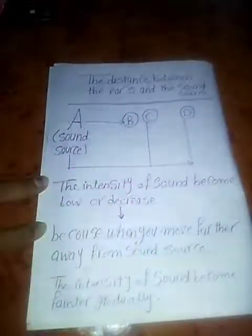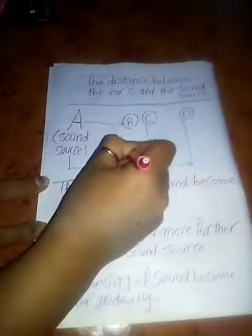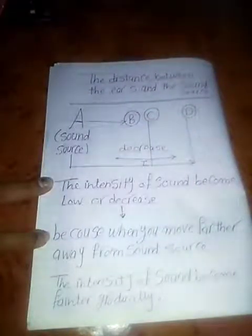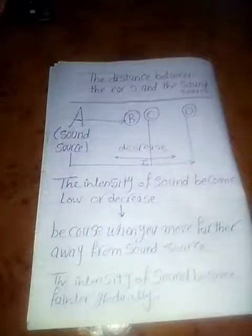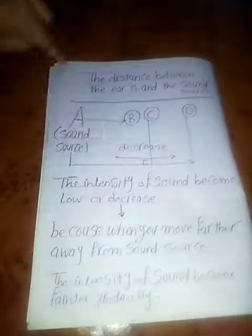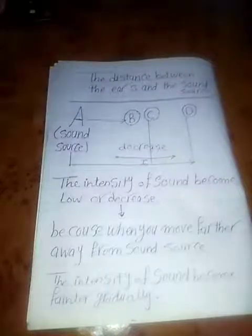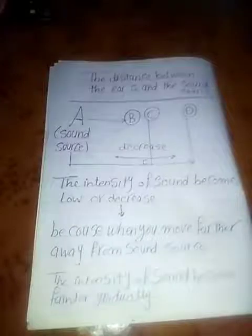When I go from B to C and then to D, the intensity of sound becomes lower and decreases. Why? Because I move away further from the sound source. The further you move from the sound source, the fainter and lower the intensity of sound becomes, gradually.